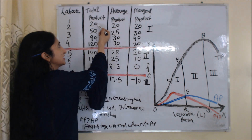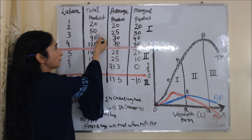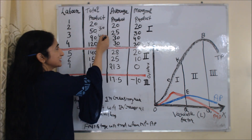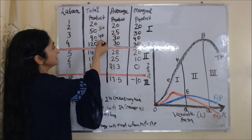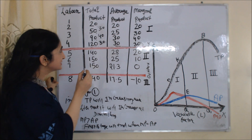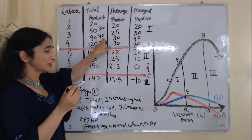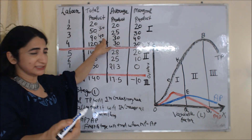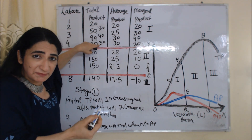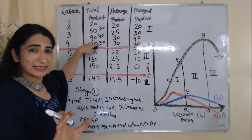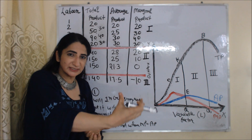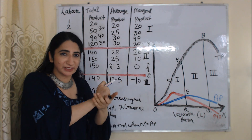You can see: initially TP increases from 20 to 50 — an increase of 30. Then TP increases from 50 to 90 — an increase of 40. Then TP increases from 90 to 120 — an increase of 30. Initially TP increased by 30, then by 40 — that's increasing at an increasing rate. After that, it increases by 40 then 30 — that's increasing at a diminishing rate.